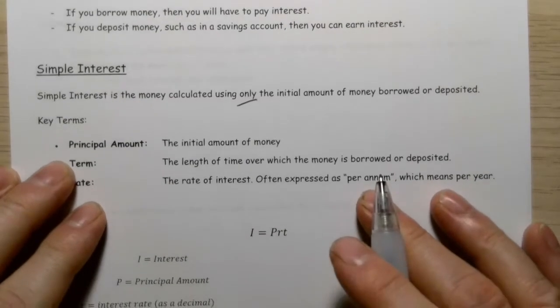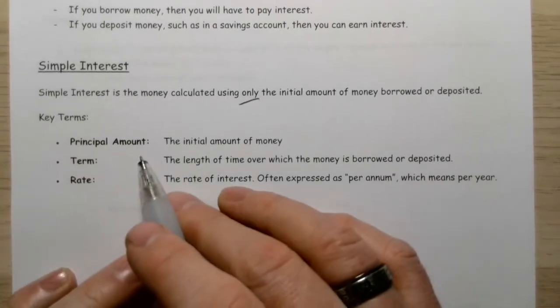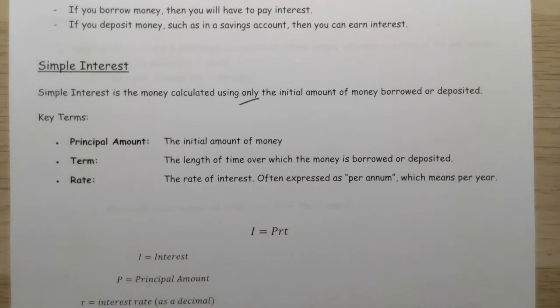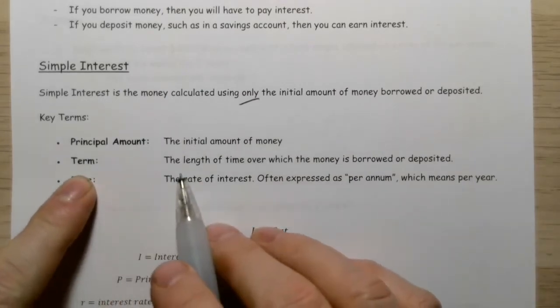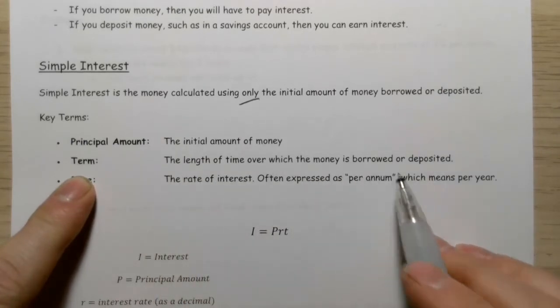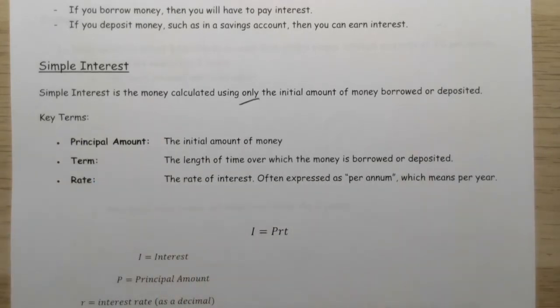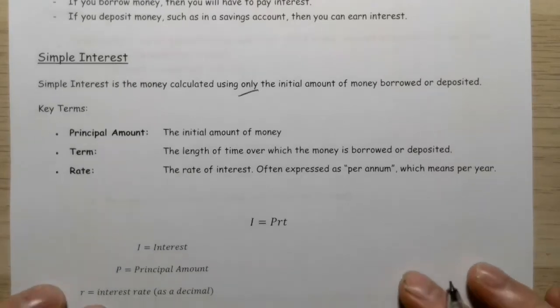Some key terms you need to know: the principal amount is the initial amount of money, either what you invested or what you borrowed. The term is the length of time over which the money is borrowed or deposited—however many years, months, or weeks.